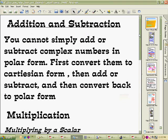First of all, in addition and subtraction, unfortunately we can't just simply add them in polar form like we did for the Cartesian form. You'll recall that if we've got some complex numbers in Cartesian form like this, we could just add the real parts and then add the other parts, and that would have been 3 plus 4i, very easy.